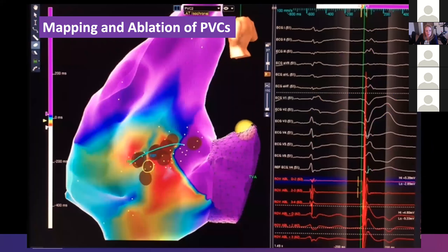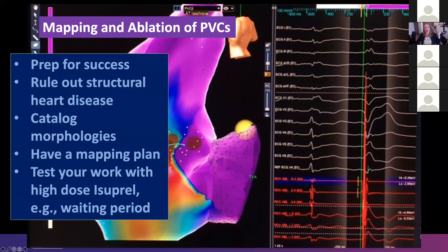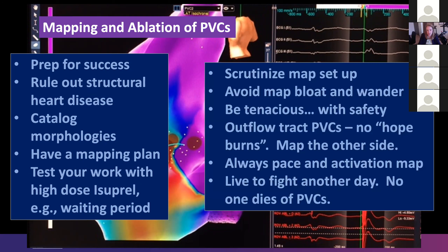So to summarize: prep yourself for success. Rule out structural heart disease. Catalog your morphologies. Have a mapping plan and know how you're going to set up your map. Test your work when you're done with high-dose isoproterenol and a reasonable waiting period — if your PVC went away after your fifth ablation lesion, you need to wait, and sometimes you need to wait an hour. You don't want it to come back while they've pulled sheaths. Scrutinize your map setup. Avoid map bloat and wander that can happen with taking points in both sinus and with PVCs.